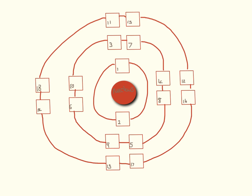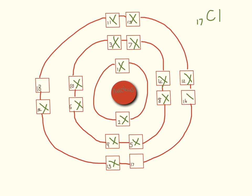We're going to try a couple of examples together. First, we'll do chlorine, which has an atomic number of 17, so it has 17 electrons. Electrons are traditionally drawn as crosses, so I'm just going to go through and fill in the boxes until I get to 17, counting one through to 17.